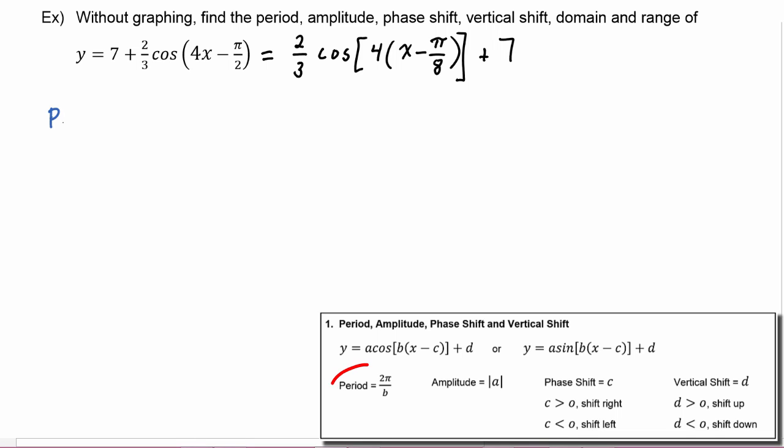So we know the period is equal to 2π over B. And in this case, B is equal to 4, so this will be 2π over 4, which reduces to π over 2. The amplitude is equal to absolute value of A, and A is equal to 2/3. So we're taking the absolute value of 2/3, which is 2/3.